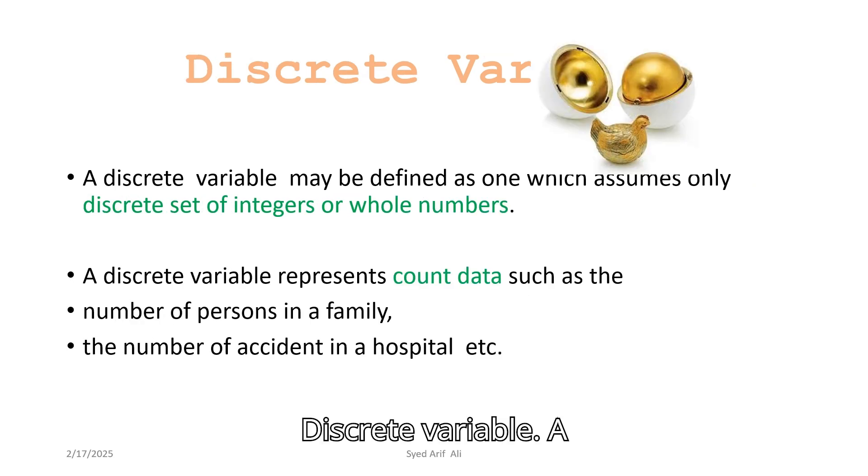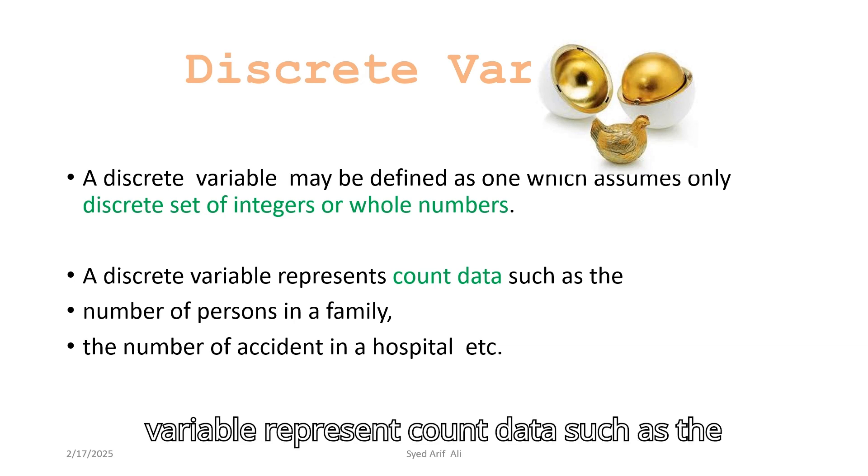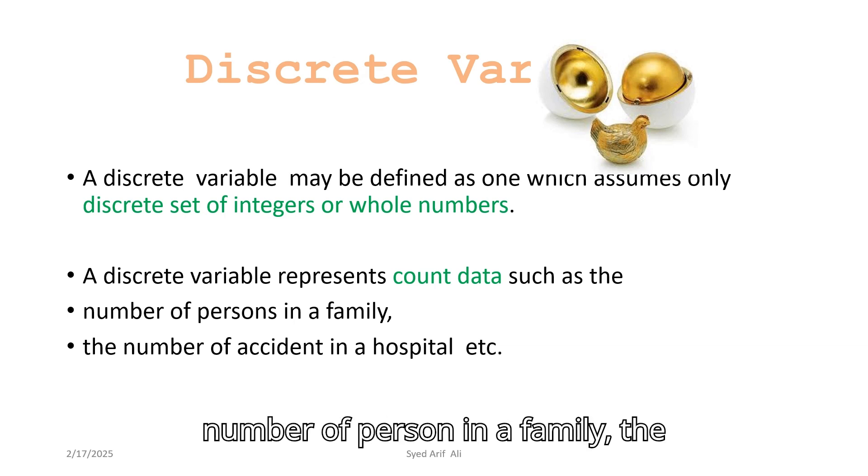A discrete variable may be defined as one which assumes only a discrete set of integers or whole numbers. A discrete variable represents count data, such as the number of persons in a family, the number of accidents in a hospital, or the number of patients.